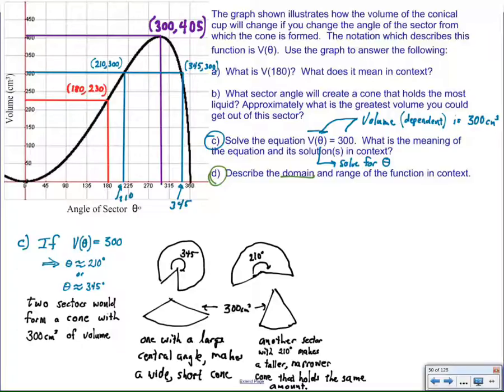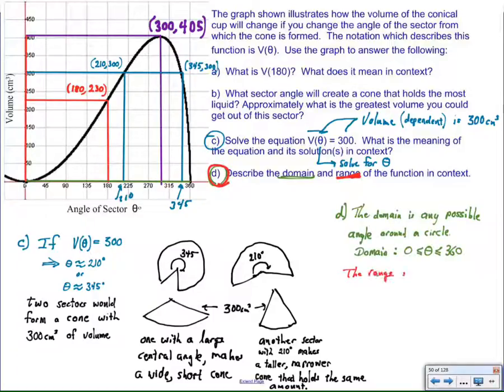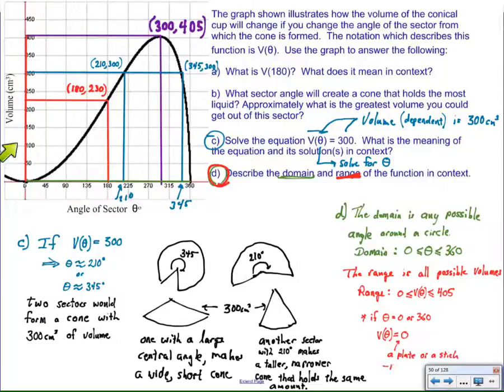Finally, I'm asked to describe the domain and range in the context. And so, for the domain, I understand that's referring to the angle of the sector, which means I only have 360 degrees to choose from. So, theta could be any angle between 0 and 360. The range, on the other hand, is all possible volumes. And I see since the highest volume is 405 and the lowest volume is 0, that that would be the range of values for this particular function. Any number where the volume is between 405 and 0 inclusive.